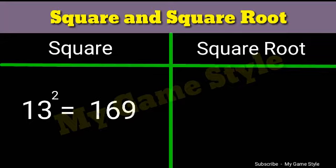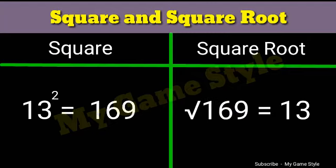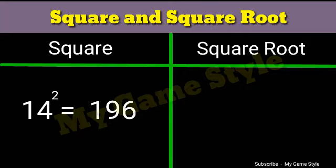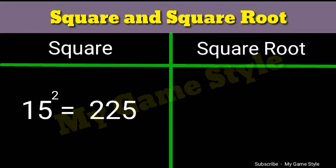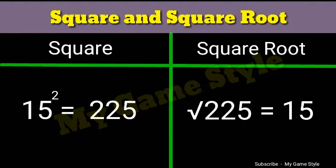Thirteen square is equals to 169. Square root 169 is equals to 13. Fourteen square is equals to 196. Square root 196 is equals to 14. Fifteen square is equals to 225. Square root 225 is equals to 15.